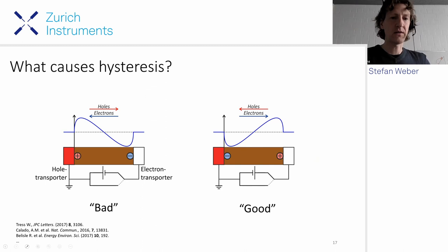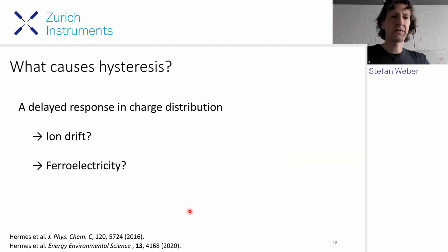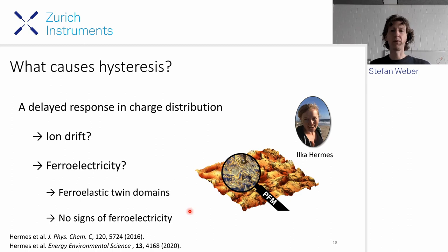So that was the theory a couple of years ago. We were asking if we can visualize with scanning probe microscopy the reasons for hysteresis in these cells. The ideas were either ion drift or ferroelectricity. My PhD student Ilka investigated this very thoroughly and discovered stripe domains in perovskite surfaces, which were quite exciting because nobody had reported them before. The paper was the first to report these stripe domains, which turned out to be ferroelastic twin domains. So far we couldn't find any signs of ferroelectricity in this material.